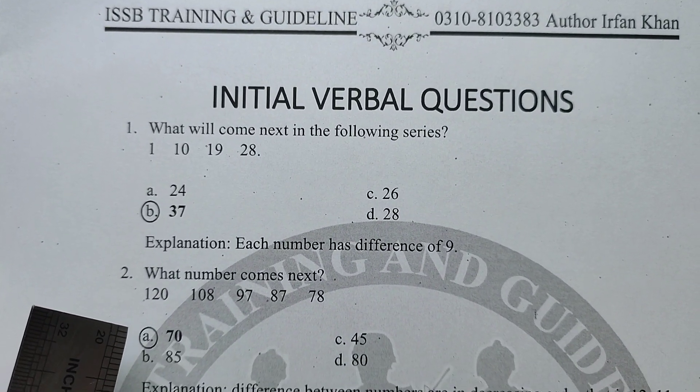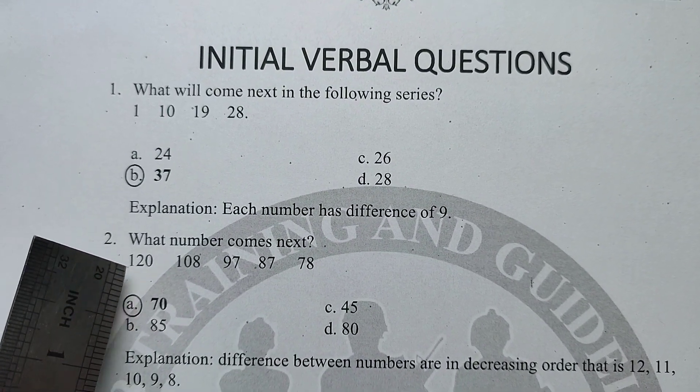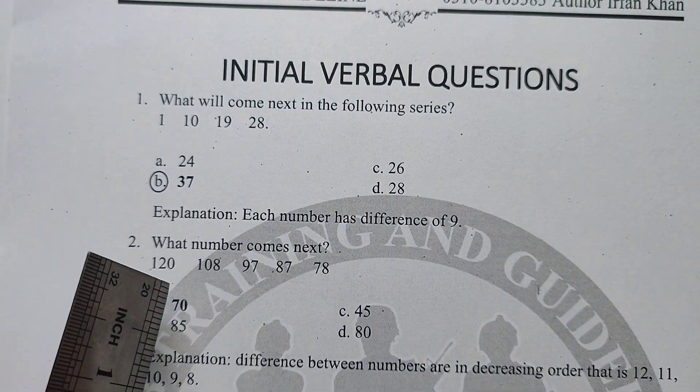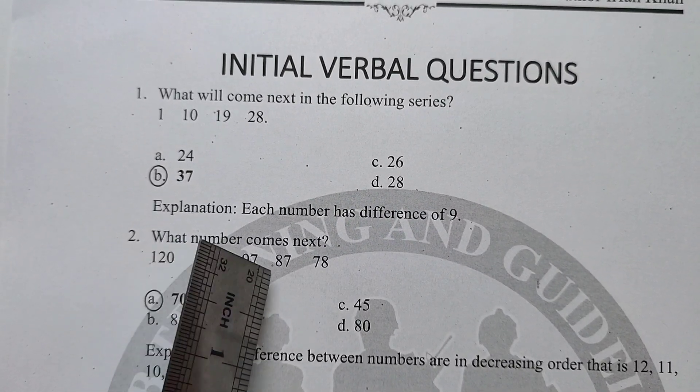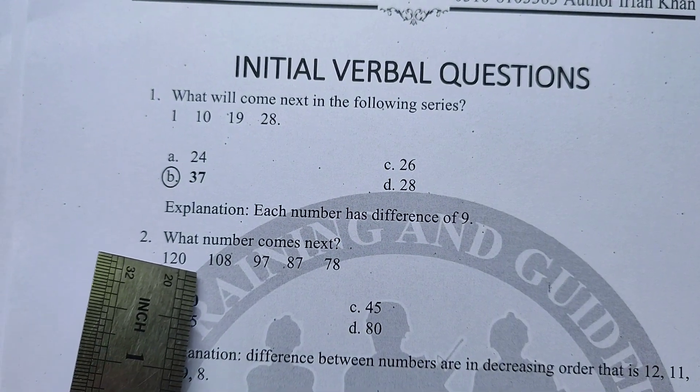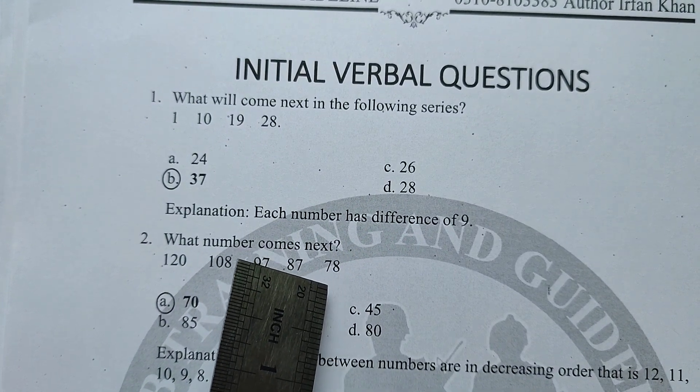Question number 2: what number comes next? The series is 120, 108, 97, 87, 78. We check the differences: 120 to 108 is 12, 108 to 97 is 11, 97 to 87 is 10, 87 to 78 is 9. The differences are decreasing — 12, 11, 10, 9, 8. So subtract 8 from 78 and the answer is 70.